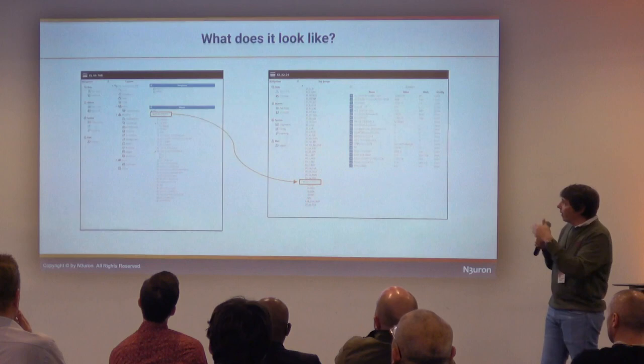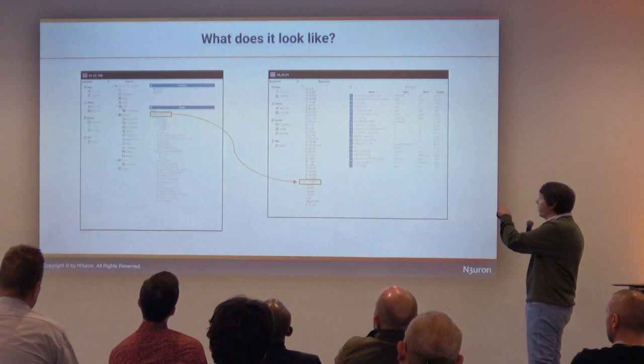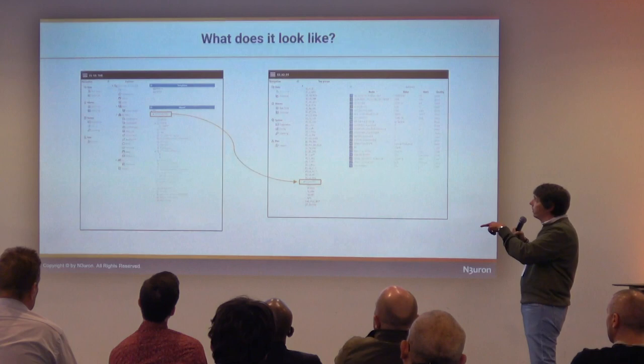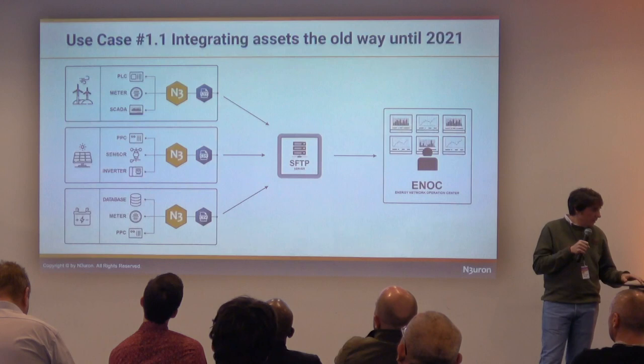Here's an example with Neuron. On the left-hand side, we have a data model created with one Neuron node at the edge, which is publishing data to an MQTT broker. Here we have another central node, which is subscribed to data coming not only from that remote node but from many other plants, in this case in Spain.